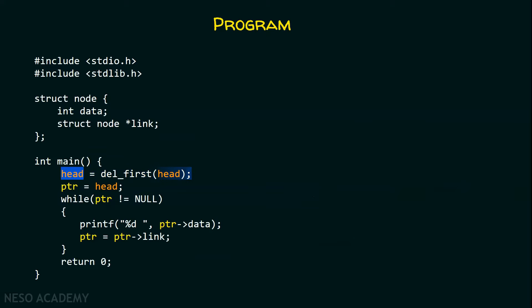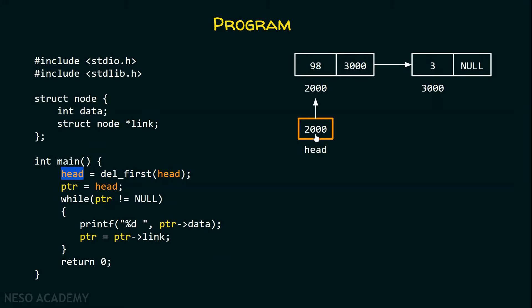Here in the main function, head will receive address 2000, because we returned head from the delFirst function. This head will receive address 2000. It is very important to receive this address, because if we didn't receive it, changes would not get reflected in the main function — head would still contain address 1000, which is wrong. It is important to assign this address to head so that it can point to the new first node of this list.